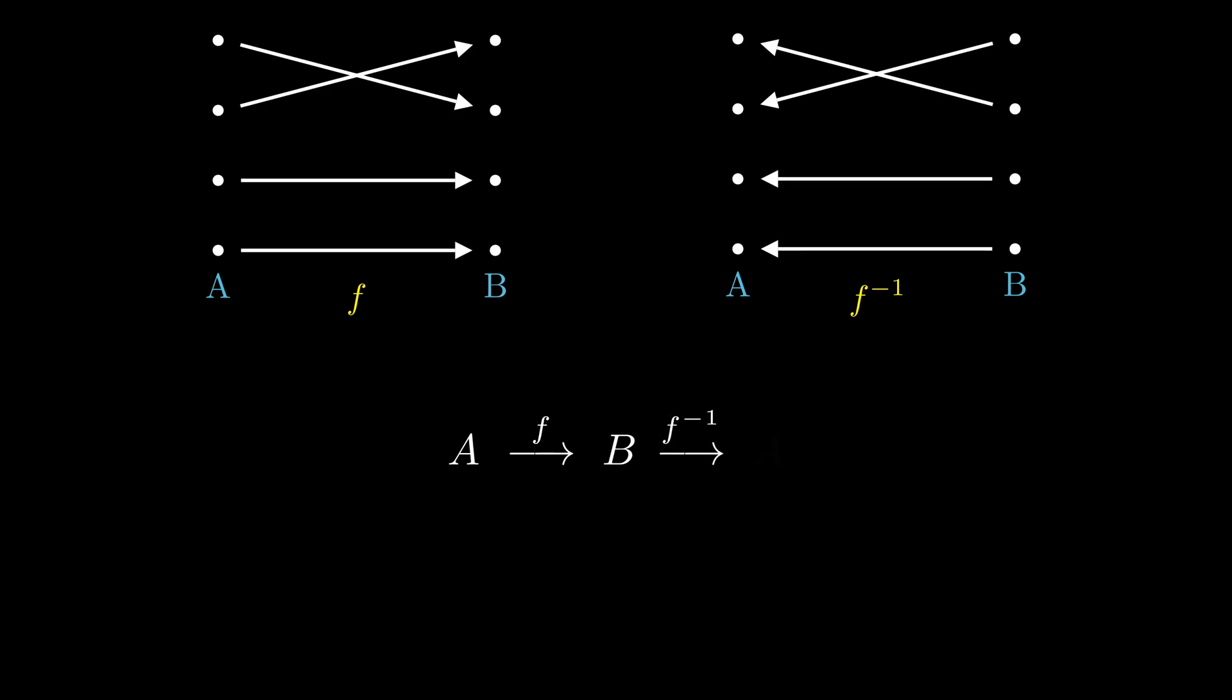Well, now we can apply inverted F to the elements of B and arrive back at A. It should not surprise you that these two functions cancel each other out and their composition is an identity function, which does nothing to the elements of A.